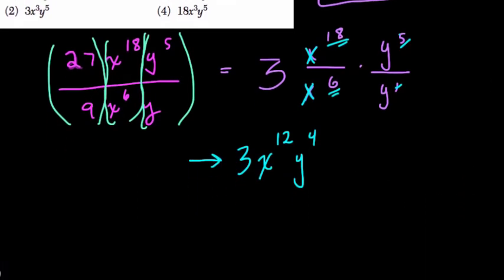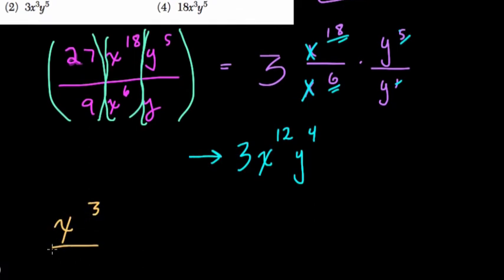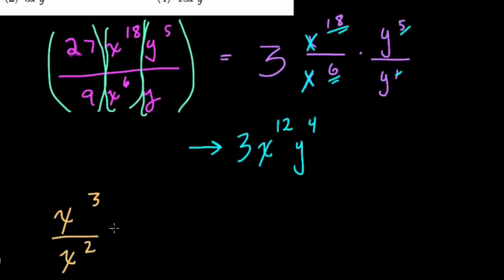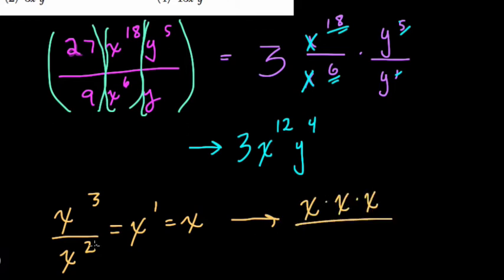In this simple example, we have x to the 3rd over x squared. Well, that equals x to the 1st or x. And the basic logic is that, well, if you have x to the 3rd, that's x times x times x. And x squared is just x times x.